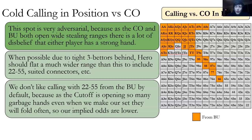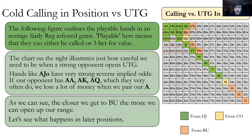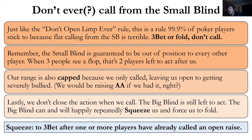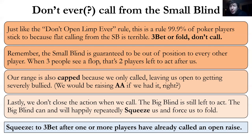We're never going to call from the small blind — we're going to either three-bet or fold. There are a few key points: we're guaranteed to be out of position post-flop, people are behind us, and because we just called we've capped our range, essentially saying 'I don't have that good of a hand.' Also, we don't even close the action — the big blind can still act. We call pre-flop and all of a sudden it looks real pretty for the big blind to raise up and force us to fold — that's the squeeze.